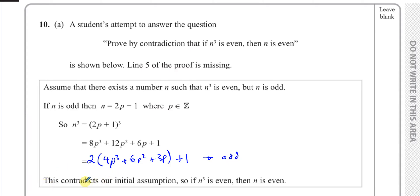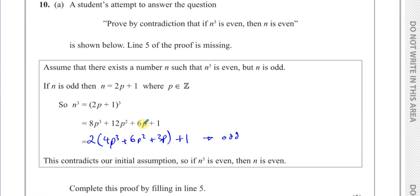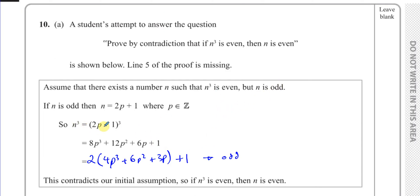So we have a contradiction — this contradicts our initial assumption. We assumed that n is odd and n cubed is going to be even. But when n is odd, n cubed didn't become even; n cubed became odd. So our initial assumption is contradicted. Therefore, the original statement is true: if n cubed is even, then n is even. We've proved this by contradiction. It's one mark for just writing that factorization — taking two out of the first three terms to show that part of the expression is even, and then the one added to it makes the whole thing odd. So if we start with an odd number and cube it, we don't get an even number. Therefore it must be true that if n is even, then n cubed will also be even — and if n cubed is even, then n must have been even.